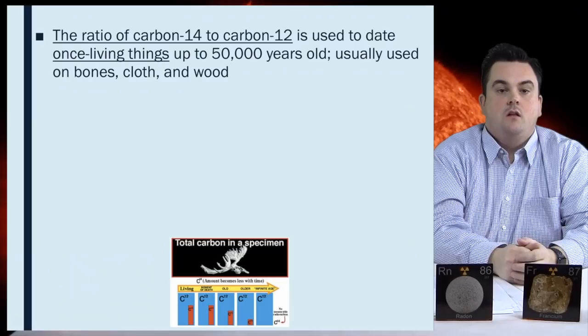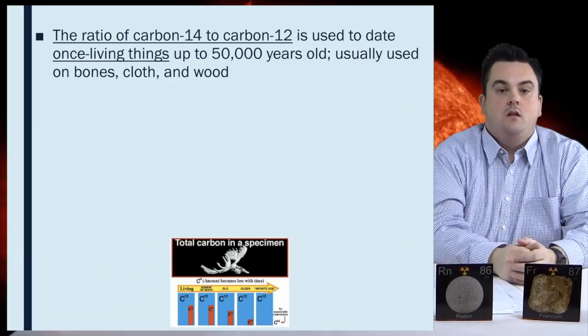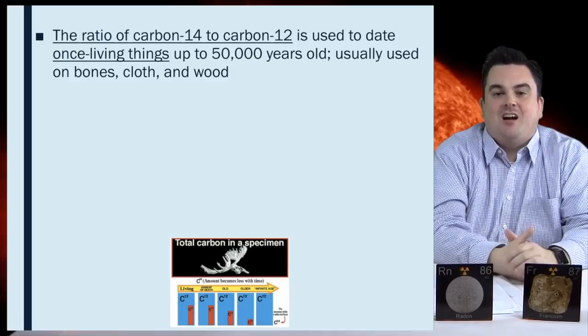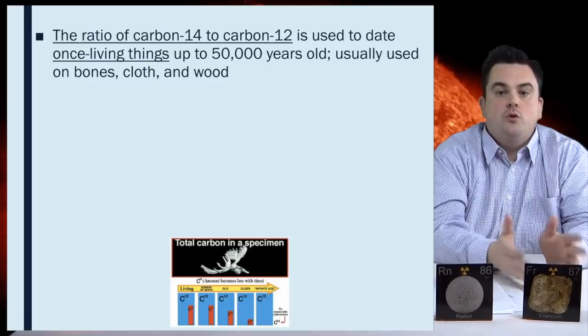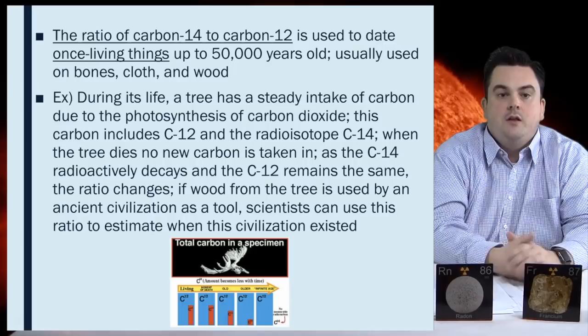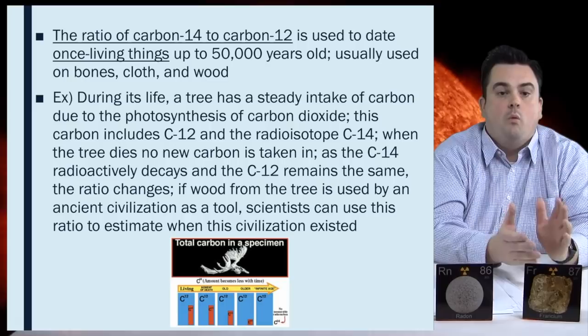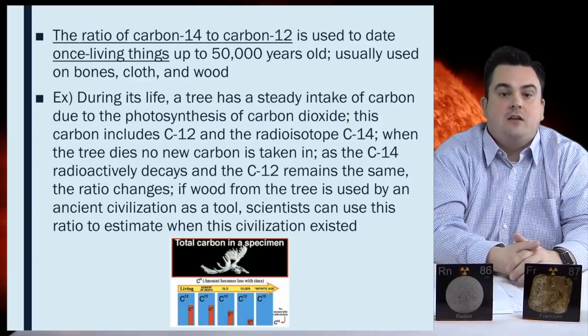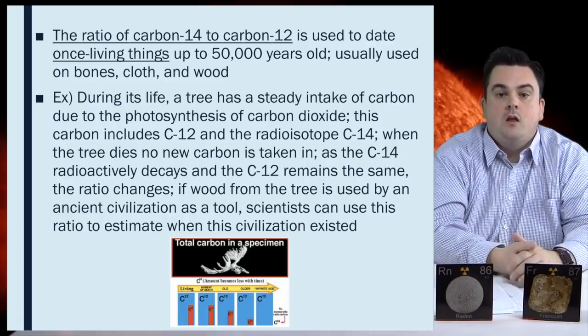The ratio of carbon-14 to carbon-12 is used to date once living things, up to 50,000 years old. Usually used on bones, cloth, and wood. So for example, during its life a tree has a steady intake of carbon due to the photosynthesis of carbon dioxide. This carbon includes carbon-12 and the radioisotope carbon-14. When the tree dies, no new carbon is taken in. As the carbon-14 radioactively decays and the carbon-12 remains the same, the ratio changes. If wood from the tree is used by an ancient civilization as a tool, scientists can use this ratio to estimate when the civilization existed.